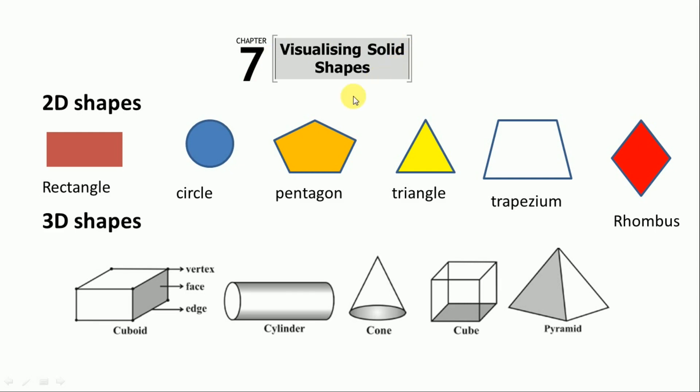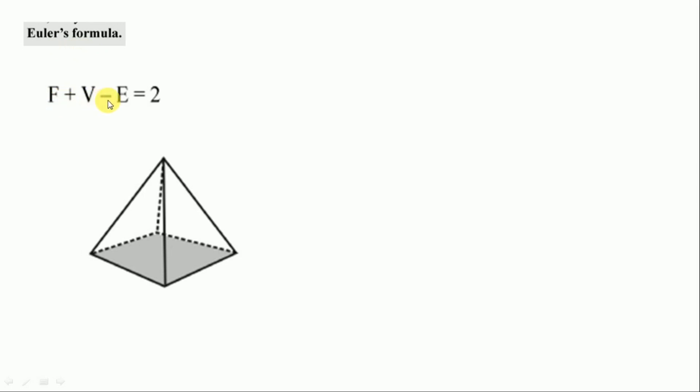Next one is chapter 7, visualization of solid shapes. Here 2D shapes are given - the 2D shapes may be asked - and 3D shapes or solid shapes also given here. Next important thing is Euler's formula. They may give one figure and ask about faces, vertices, and edges of the figure.